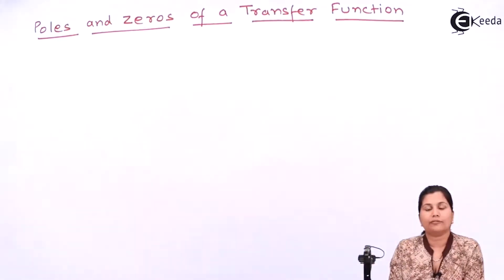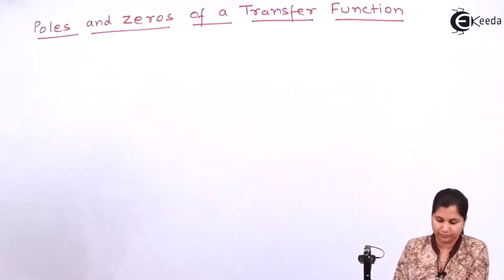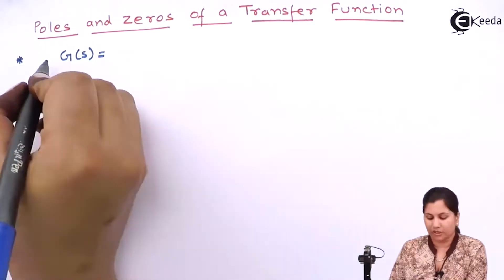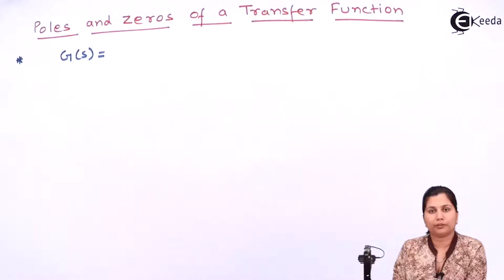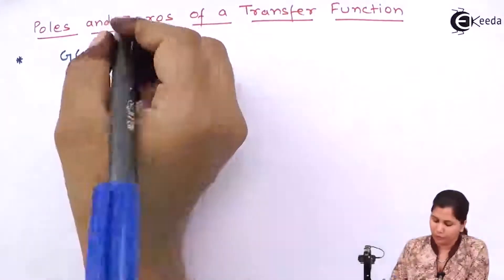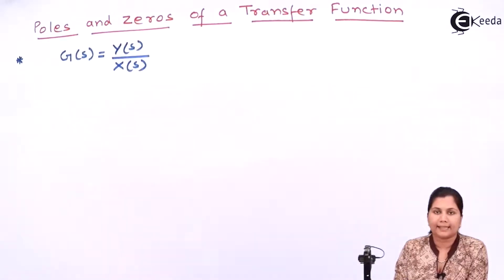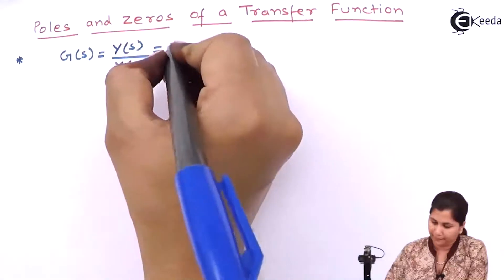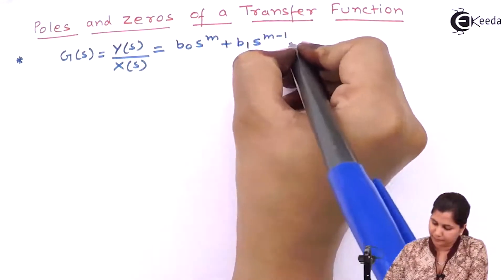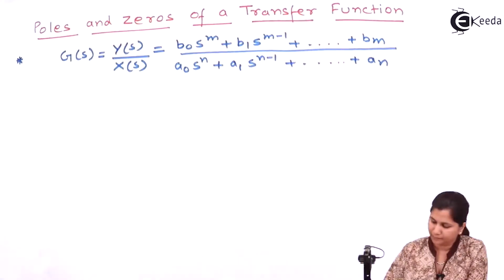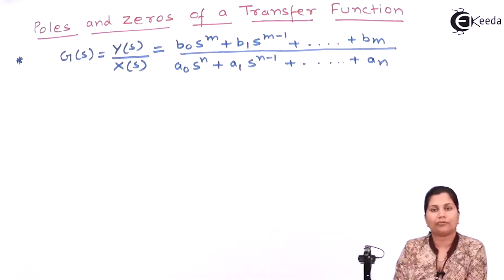Let us first write the formula for the transfer function. Transfer function G(S) is defined as the Laplace transform of the output divided by the Laplace transform of the input, that is Y(S) by X(S). If we write it in the differential equation form, then the Laplace transform of output is given accordingly. This is the representation of a transfer function.